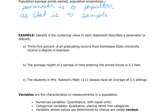Now let's identify which is a parameter and which is a statistic. Example A: 35% of all graduating seniors have received a degree in business. Because this is applied to all graduating seniors, this is a parameter. The population would be all graduating seniors from the university, and we may have gotten a random sample — say, one class doing their capstone — that sample gives a statistic, and then we make an inference about the population, making it a parameter. Example B: the average height of a sample of men entering the armed forces is 6.1. The keyword is 'sample,' so this must be a statistic.